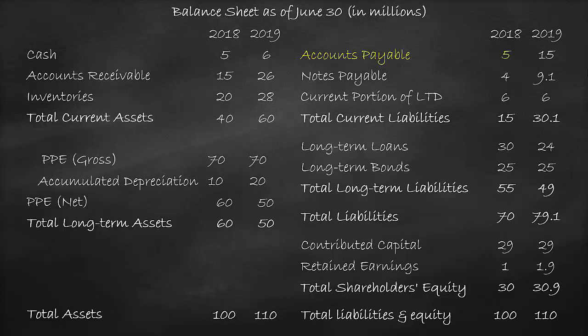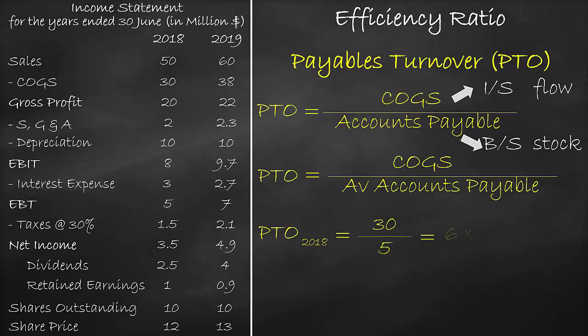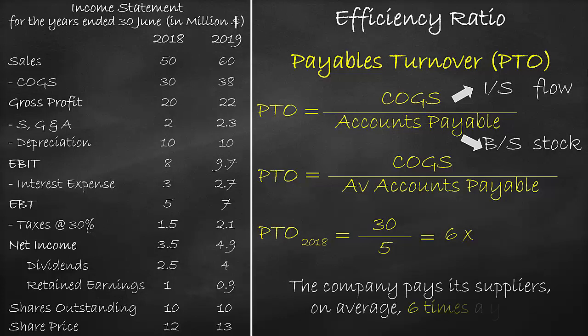In our formula, we will divide by the accounts payable of $5 million, which is equal to 6. The unit of the payables turnover ratio is times. This means that the company pays its suppliers, on average, 6 times a year. The lower the payables turnover, the better.